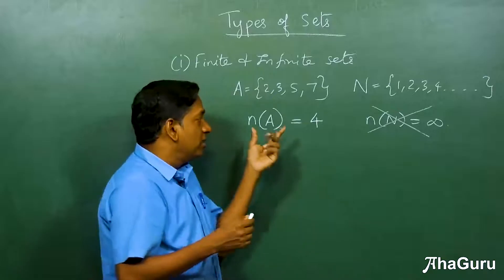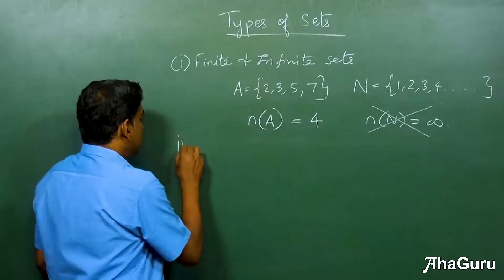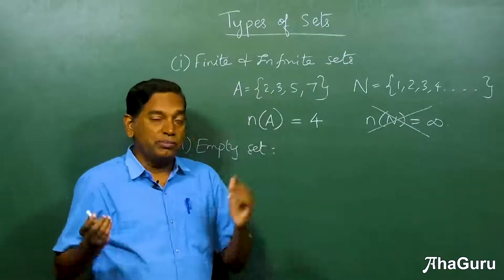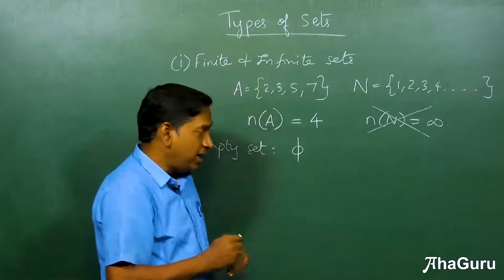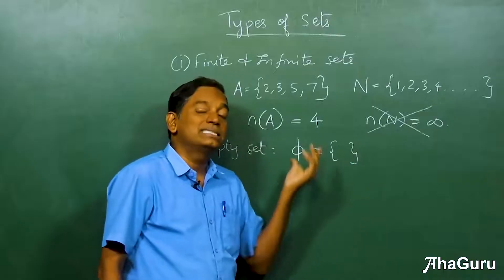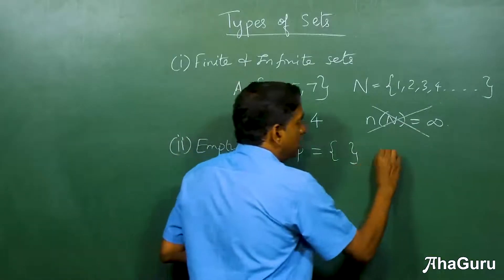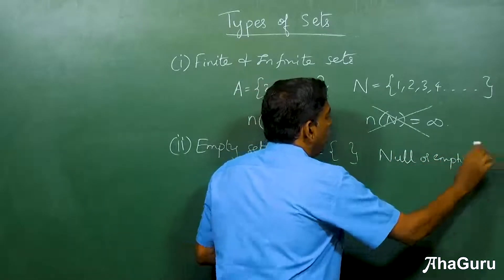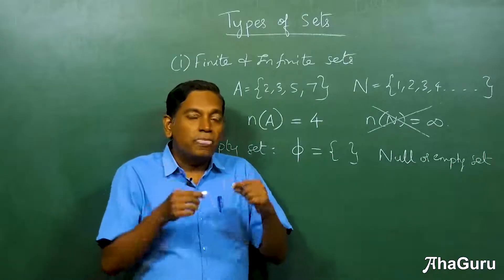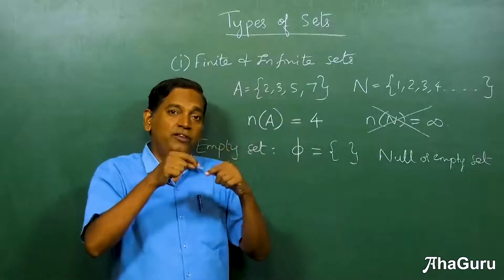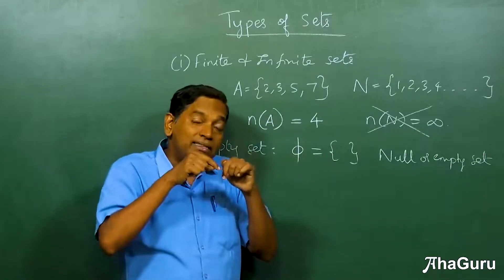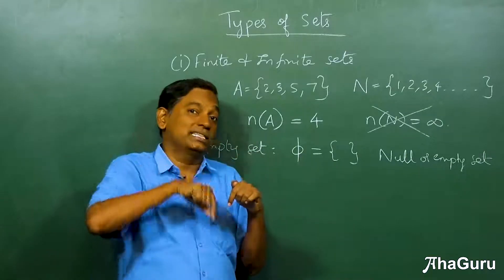The next topic is the empty set. The empty set is a set that contains no elements, denoted by the symbol φ. So φ = {} — open and close curly brackets with no element inside. It is also called the null set or void set. It's important to understand that a set containing no objects is still a set — the null set exists.